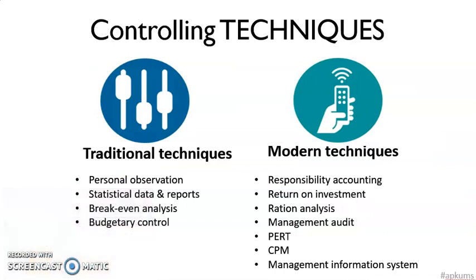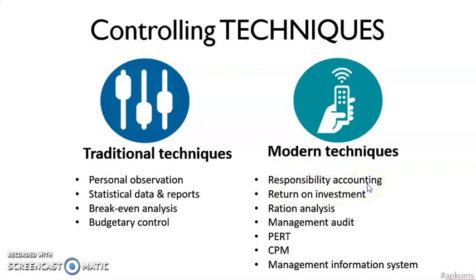There are many controlling techniques. Traditional controlling techniques include personal observation to see how workers are doing, the use of statistical data and reports, breakeven analysis, and budgetary control. At the same time, we can use modern techniques such as responsibility accounting — where a worker given a task is responsible for achieving that target — as well as return on investment, ratio analysis, and management audit.